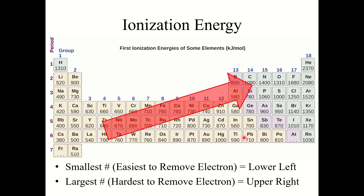The ionization energy trend is the reverse of the atomic radius trend. Smaller energy values toward the lower left mean it requires less energy — it is easier — to remove an electron. Toward the top right are the larger values, meaning it requires more energy to remove an electron. Ionization energy increases going left to right and increases going bottom to top, with larger values in the top right.